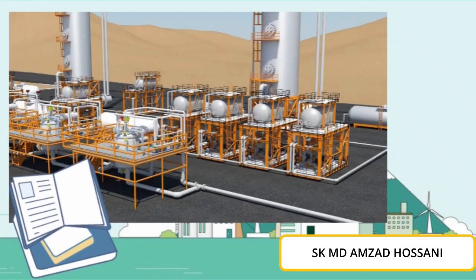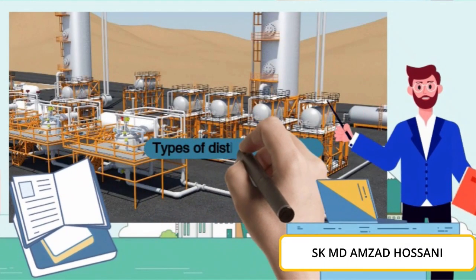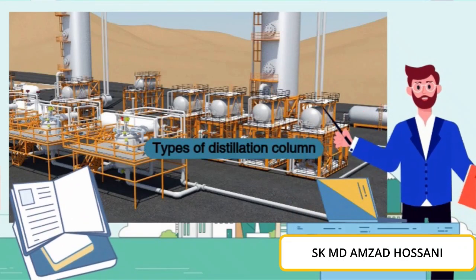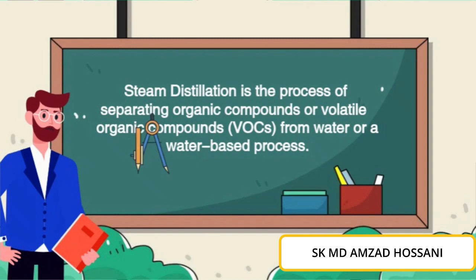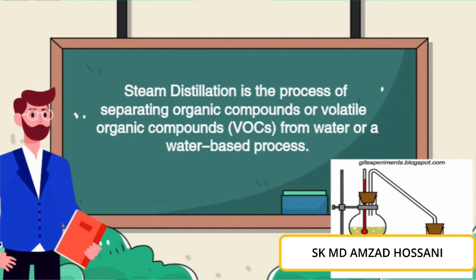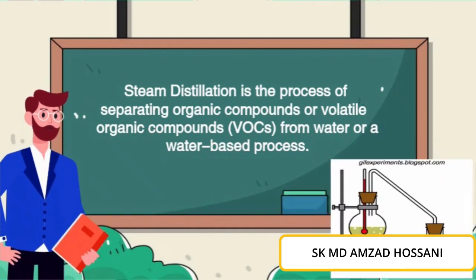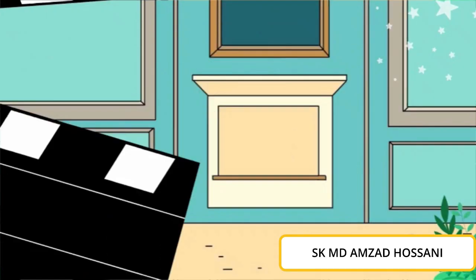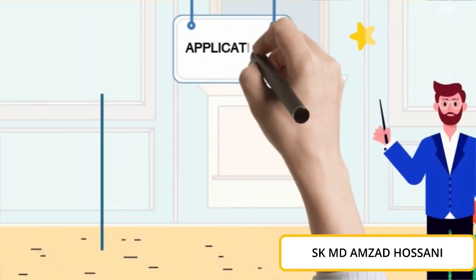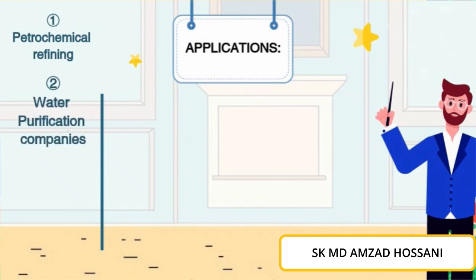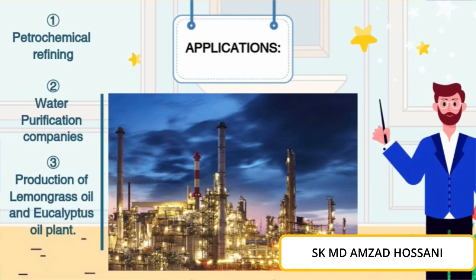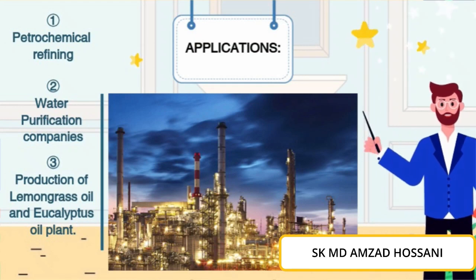Here I am going to talk about two types of distillation column: Fractional Distillation Column and Steam Distillation Column. Steam distillation is the process of separating organic compounds or volatile organic compounds from water or water-based mixtures. The applications of steam distillation can be seen in petrochemical refineries, water purification companies, production of lemon oil, and companies such as Petronas, ExxonMobil, and Palmwell.